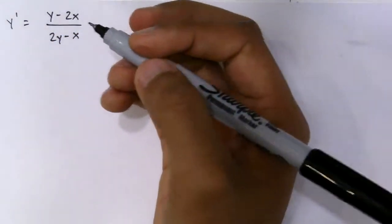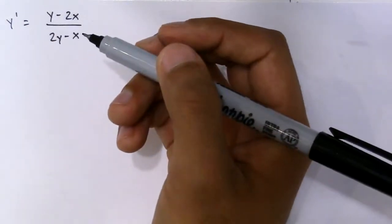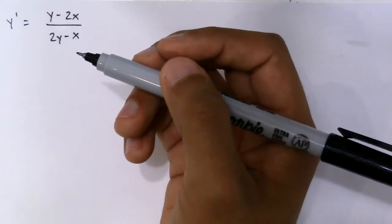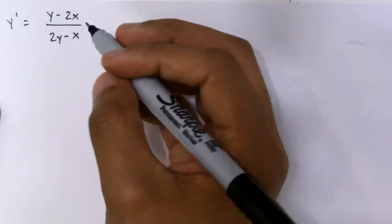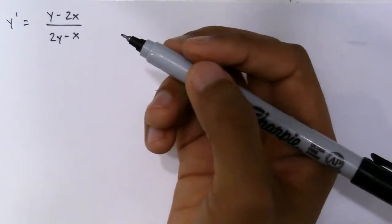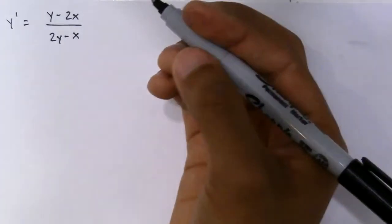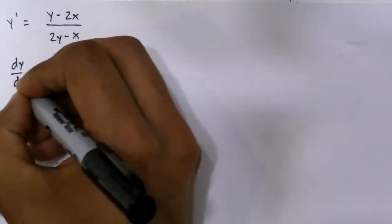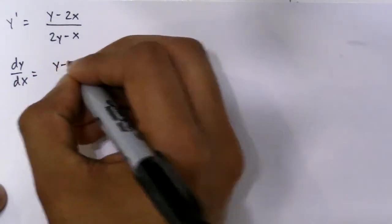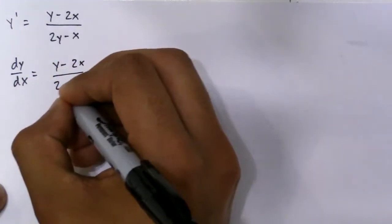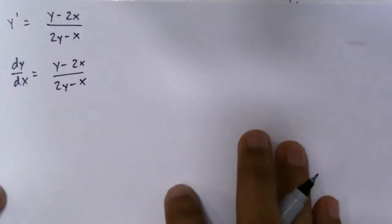So it's kind of hard to point out if you're just looking at this. You might think maybe it's separable, maybe homogeneous, maybe something, but you just have to basically work a lot of problems to see it. But this is simply dy/dx equals y minus 2x over 2y minus x, right?